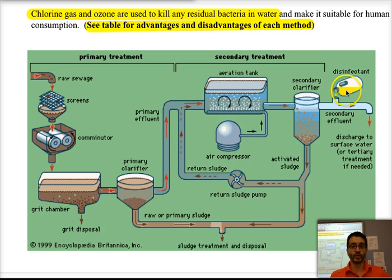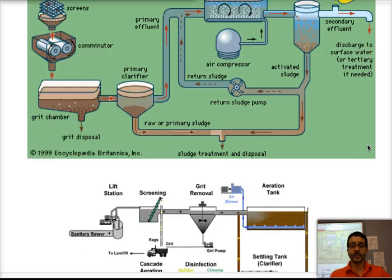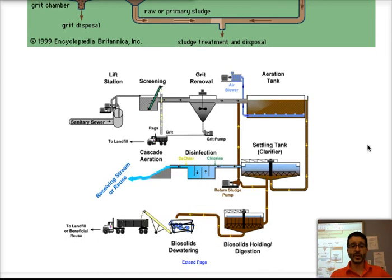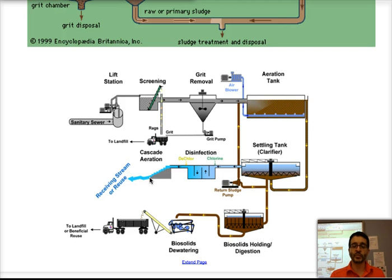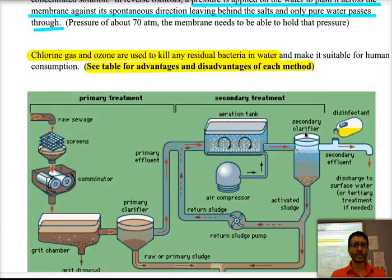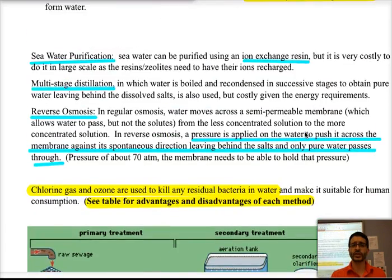The rest of the secondary effluent, once it comes out of the secondary clarifier, is treated with UV light and normally with chlorine — or it could also be done with ozone. We then allow the water to aerate some more as it enters the stream, so we can get some oxygen back into the water.